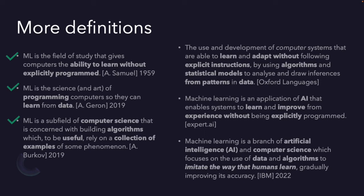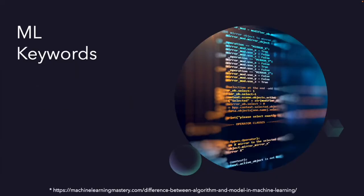So I extracted most characteristic words and keywords from these definitions, and let's look at only keywords. There are keywords from the previous definitions like programming, learn, data, experience, without explicitly, algorithms, statistical models, and artificial intelligence.